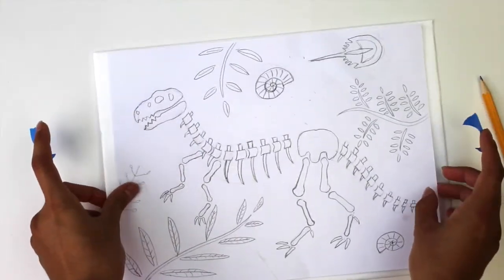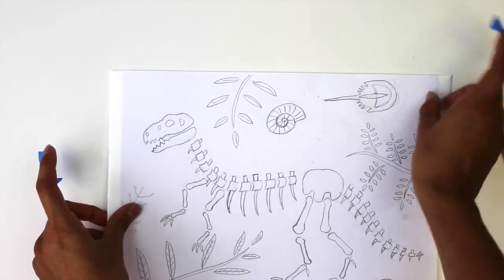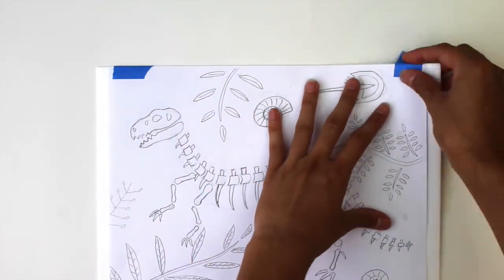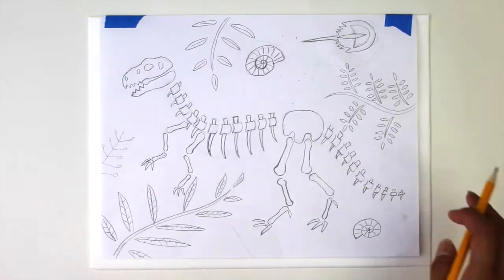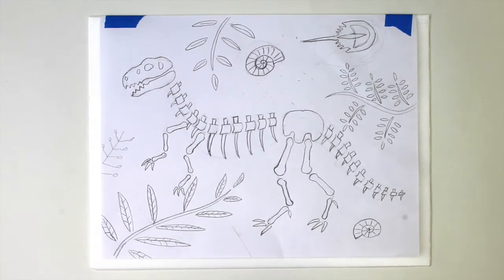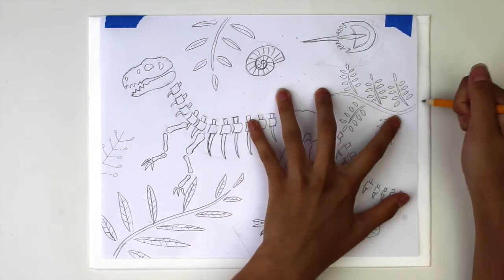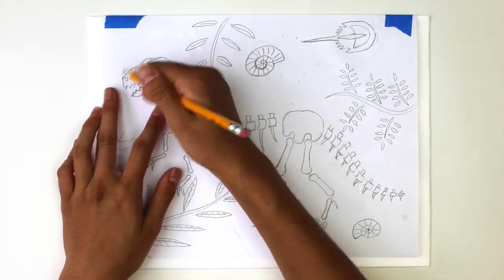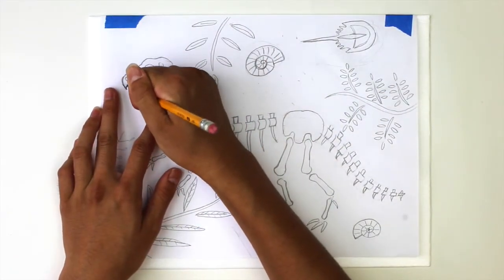Now we will etch the drawing onto styrofoam. First, tape the drawing at the top onto the styrofoam making sure you can flip the paper open. The paper is slightly bigger than the styrofoam but when you etch you will just have to extend the drawing to the borders.